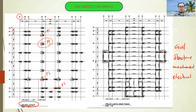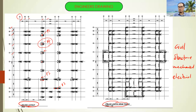It should also contain the working load on every column. For the ground beam layout, it will show you the position of the beam and also its dimension. We will go into more detail about this part in the next video.